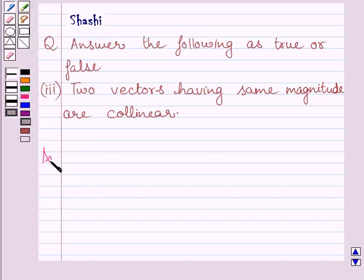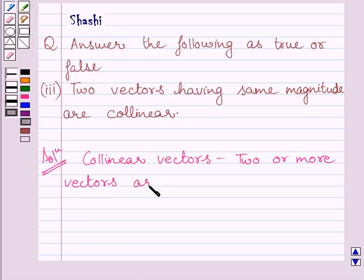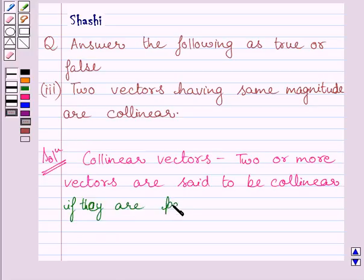Let us now start with the solution. First of all, let us define collinear vectors. Two or more vectors are said to be collinear if they are parallel to the same line, irrespective of their magnitudes and direction.